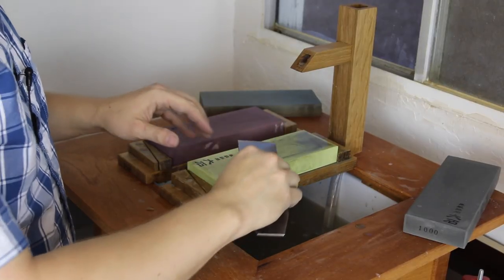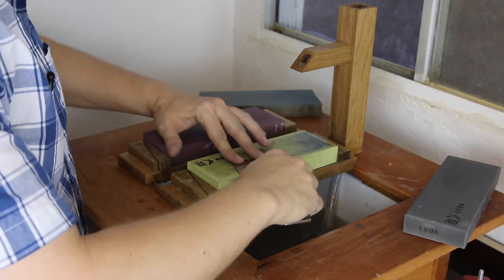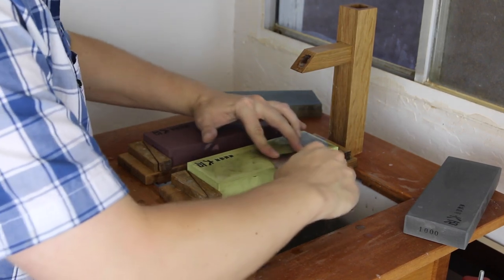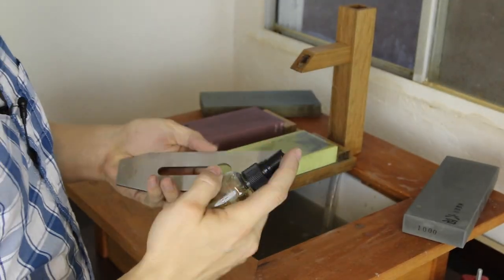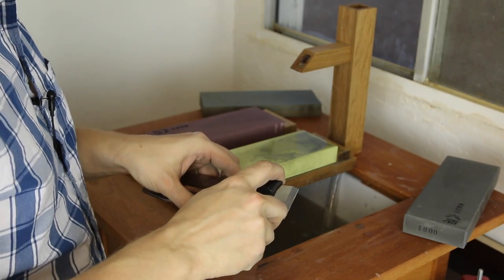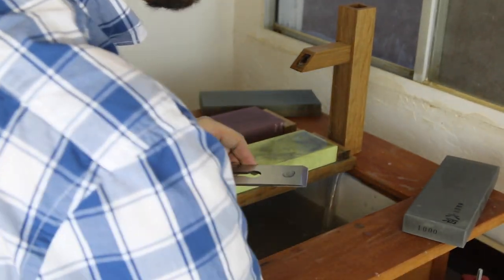After making those passes, I'm going to just get rid of the burr on the front of the blade. I'm going to dry the blade off and put a little camellia oil on the blade to help prevent it from rusting over.